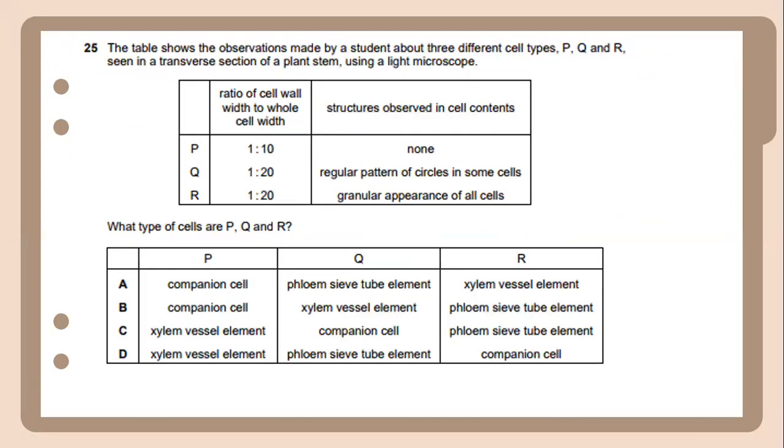Twenty-five. The table shows the observations made by a student about three different cell types P, Q, and R seen in a transverse section of a plant stem using a light microscope. What type of cells are P, Q, and R? P is a xylem vessel element, which is the structure observed in the cell content. Q is a phloem sieve tube element where it's a regular pattern of circles in some cells in terms of the structure observed in the cell content. And R is actually the companion cells, which represents granular appearance of all the cells.